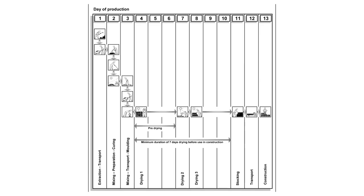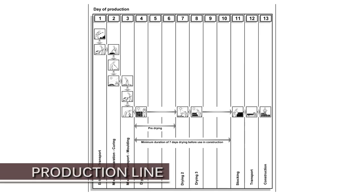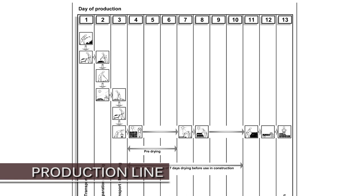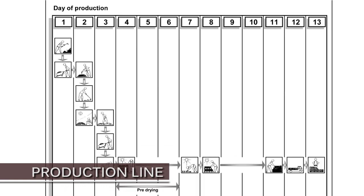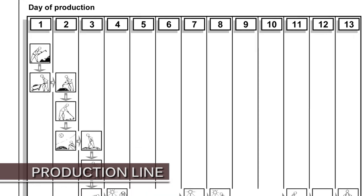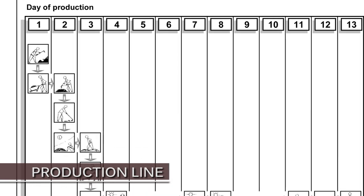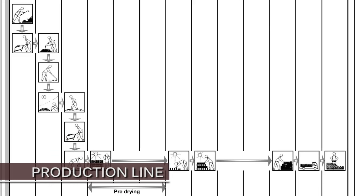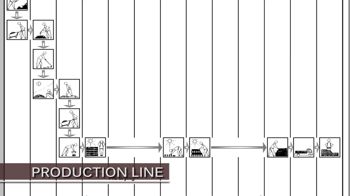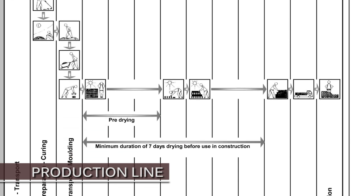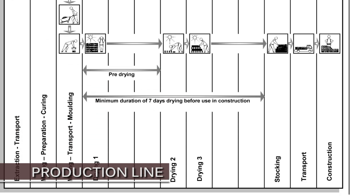Whatever the technology, brick production generally involves a production line with a mixing area, a shaping area, space for curing, for drying, and finally a storage zone.